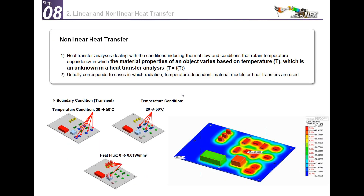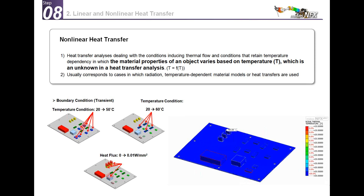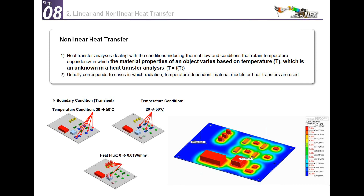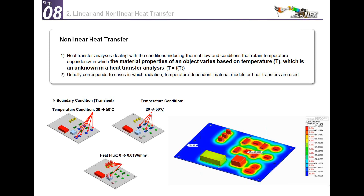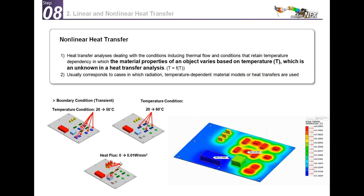Now let's talk about nonlinear heat transfer. Nonlinear heat transfer deals with conditions including thermal flow conditions that retain a temperature dependency. For example, with a PCB, you have some heating of the chip changing from 20 to 50°C, changes in heat flux, and heat generation — this is why it's nonlinear.